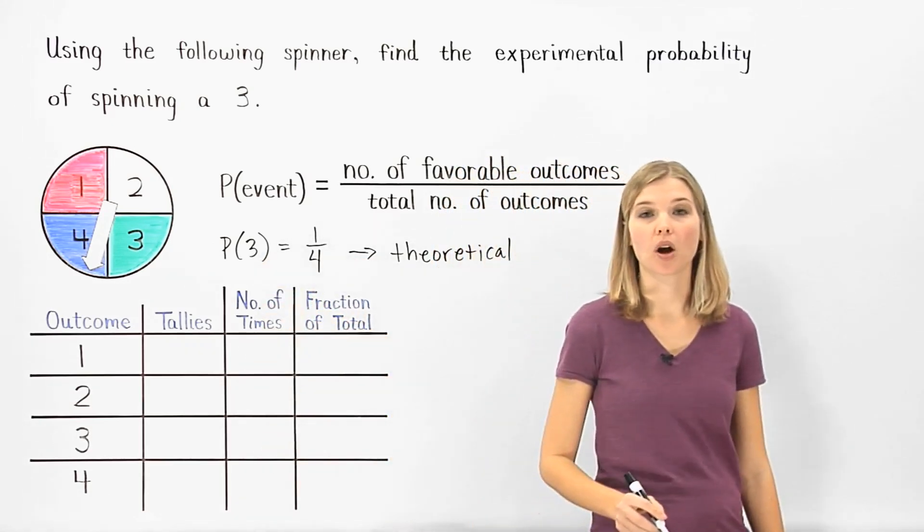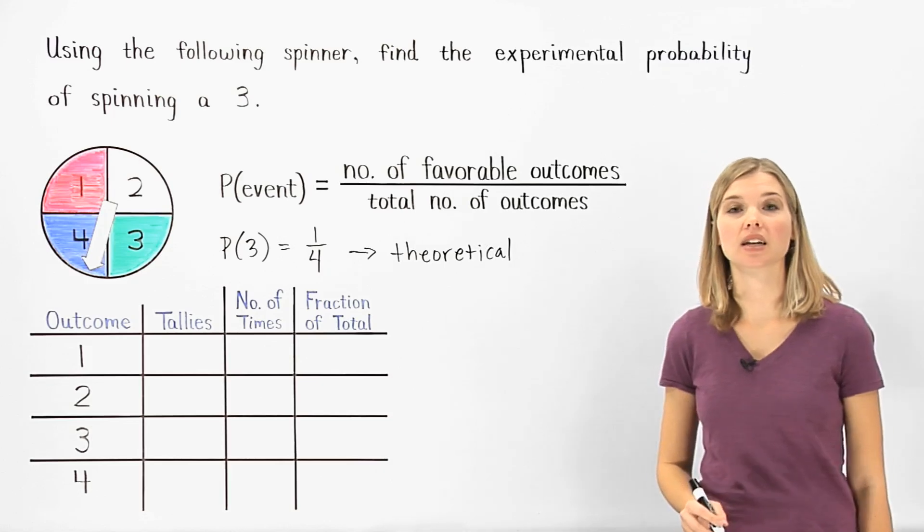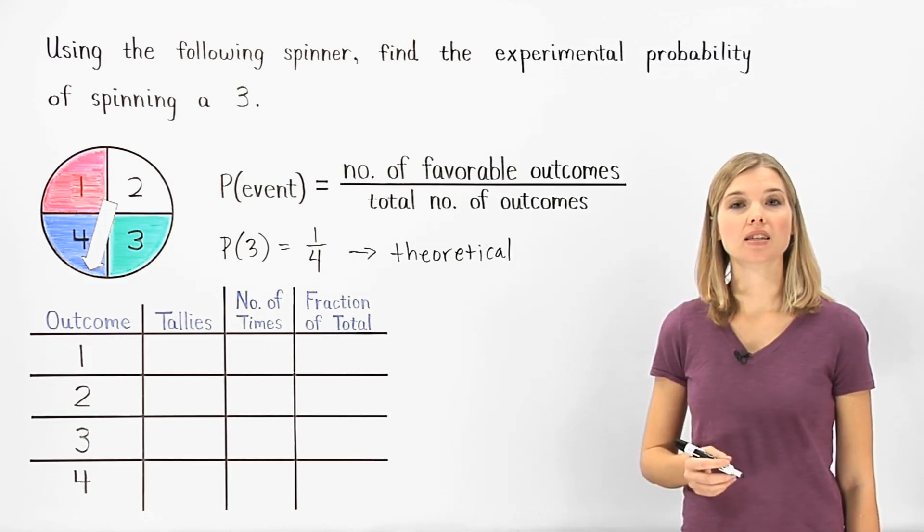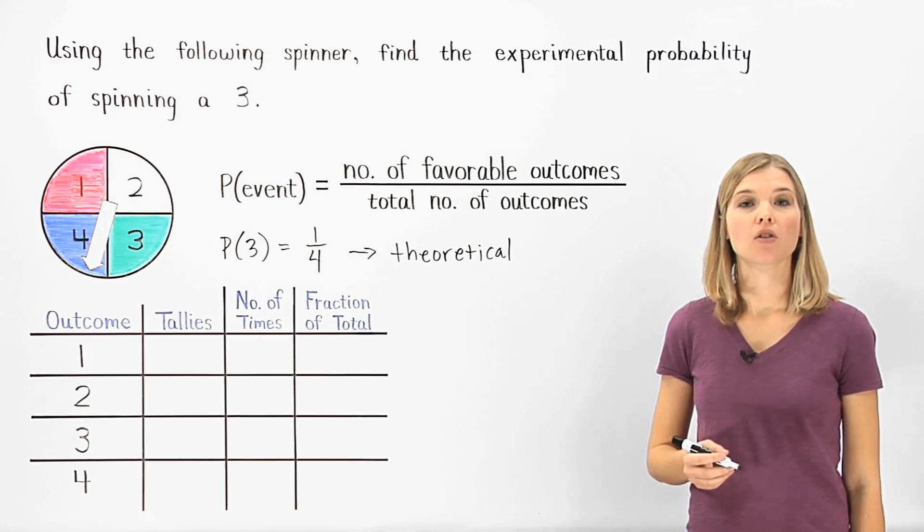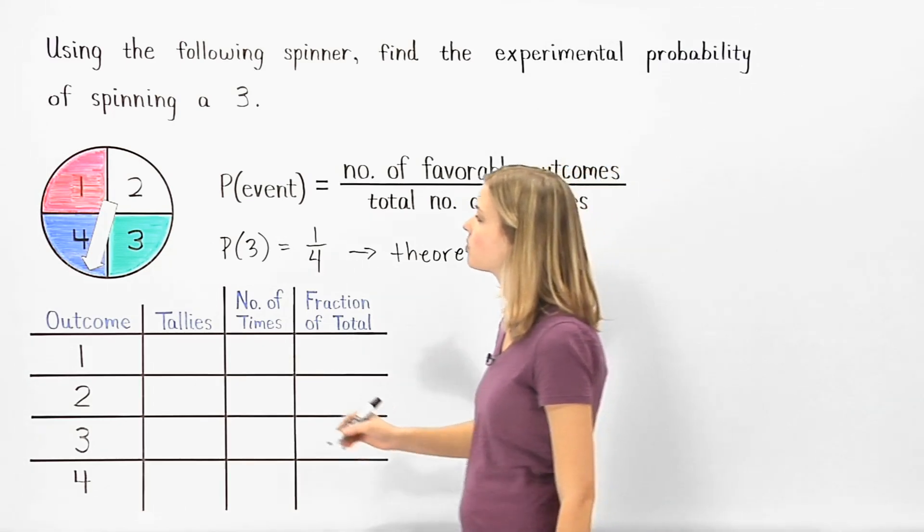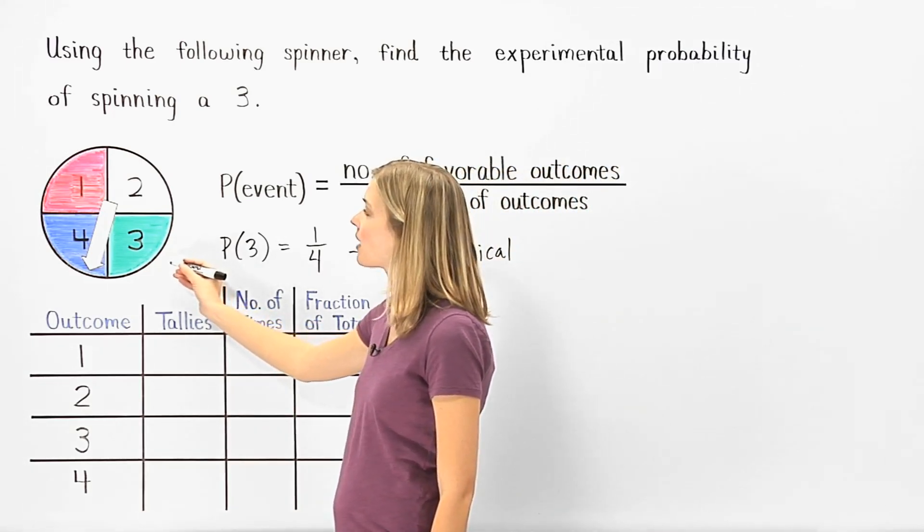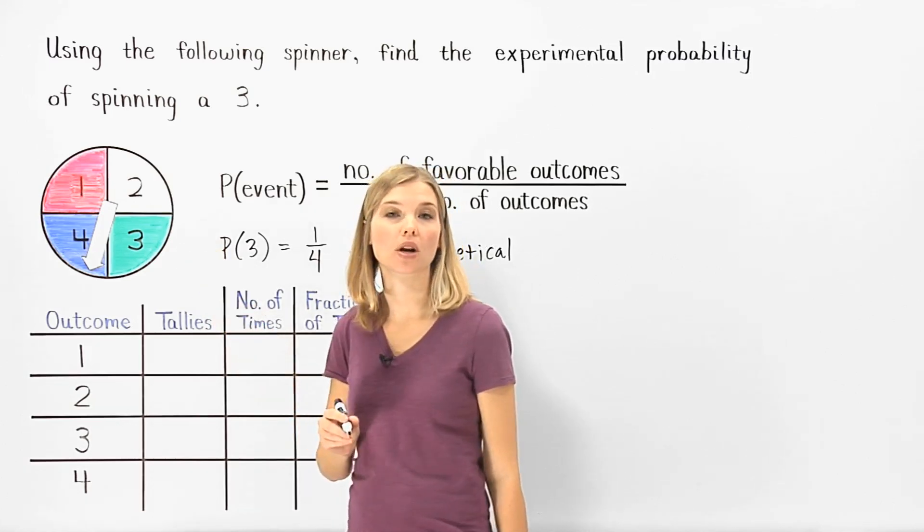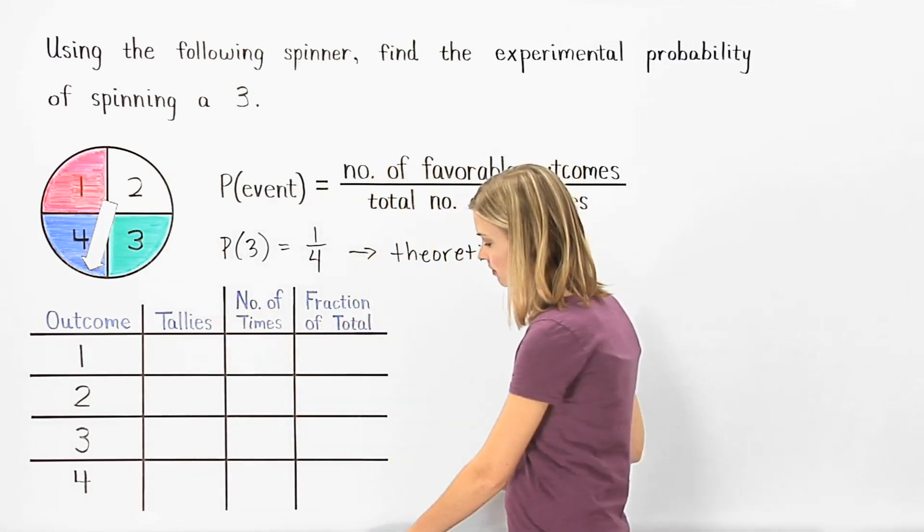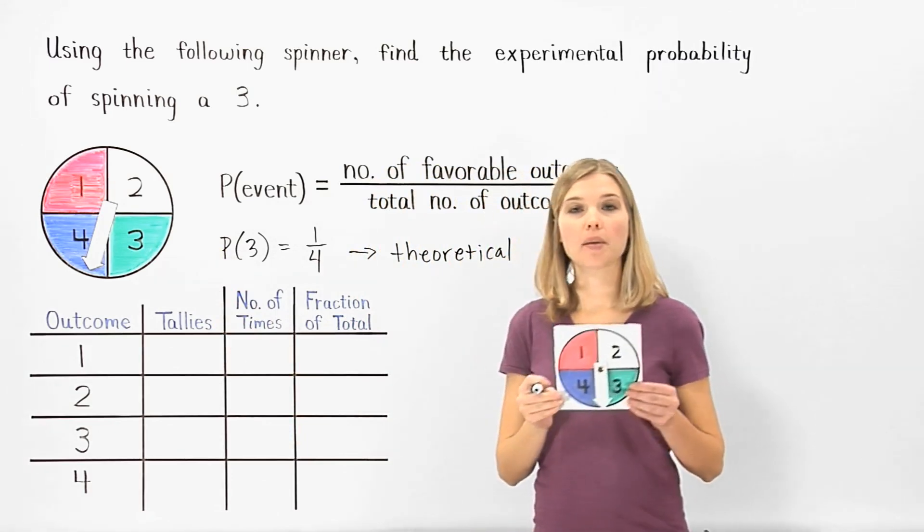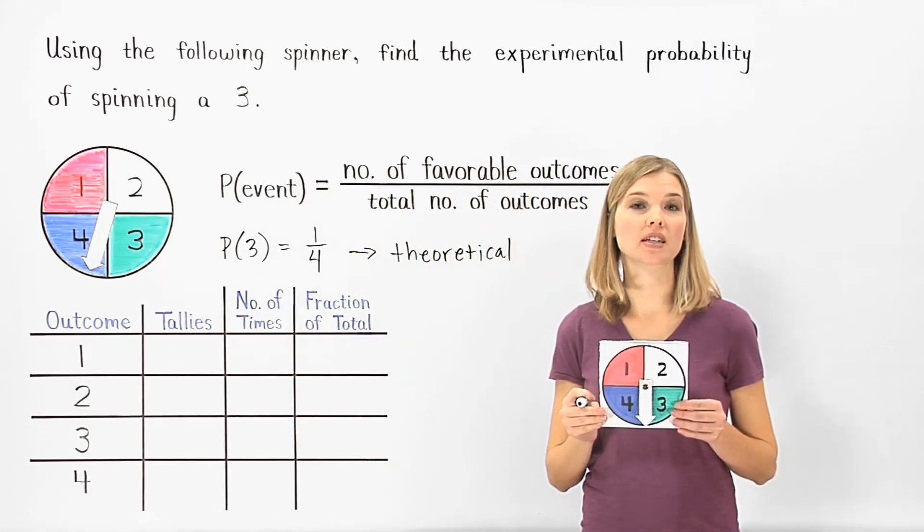We can also find the probability of a given event by conducting an experiment. This is called the experimental probability. For example, we can find the probability of spinning a 3 by actually spinning the spinner and recording the results.